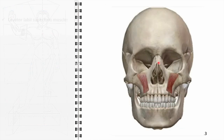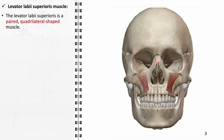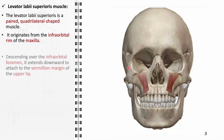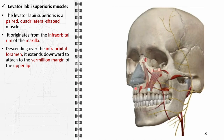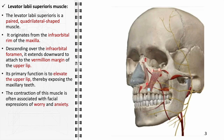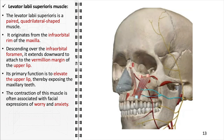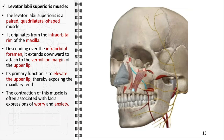The levator labii superioris, a component of the buccolabial group, is a paired, quadrilateral-shaped muscle originating from the infraorbital rim of the maxilla. It descends over the infraorbital foramen to attach to the vermilion margin of the upper lip. Its primary function is to elevate the upper lip, exposing the maxillary teeth, and its contraction is often associated with expressions of worry and anxiety. It receives innervation from the buccal branch of the facial nerve and blood supply from the facial artery.